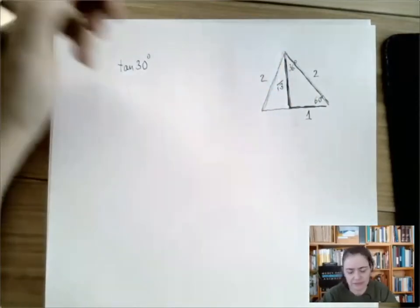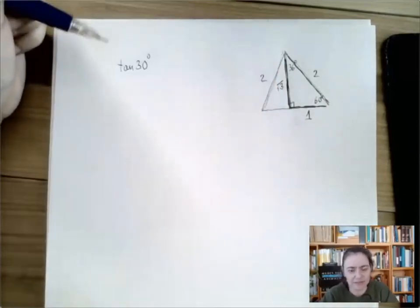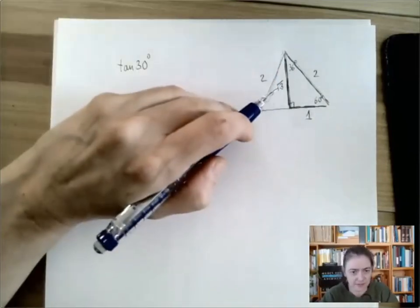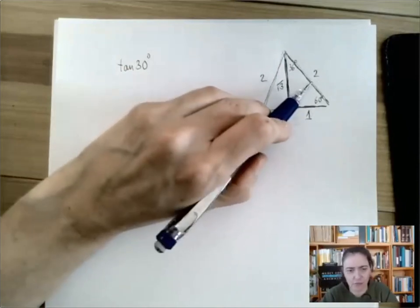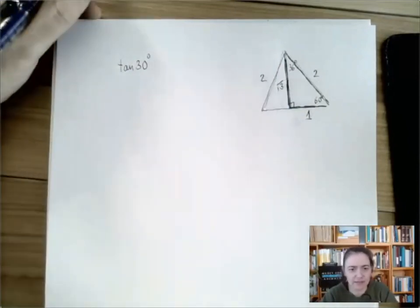You have to be careful. What we're looking for is not the hypotenuse, right? One squared plus a squared is four. And then when you solve for a squared, that's how you get three.